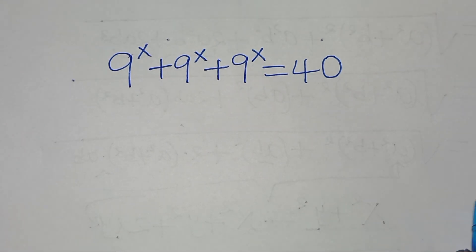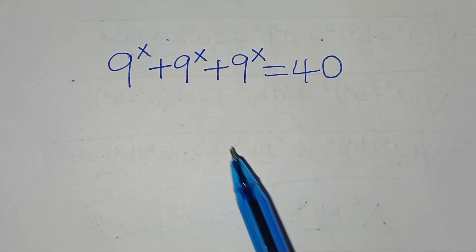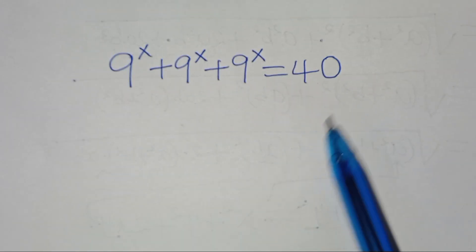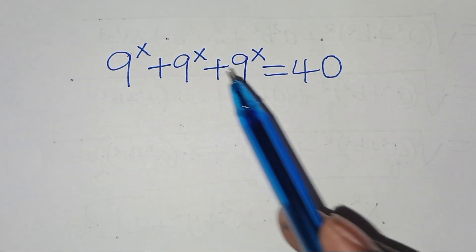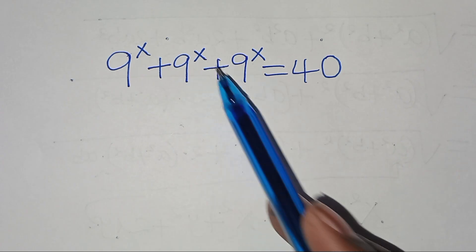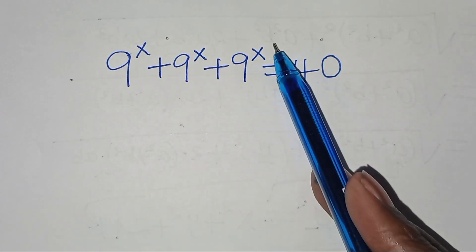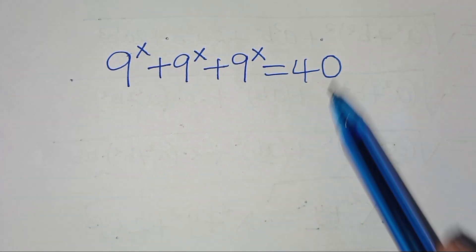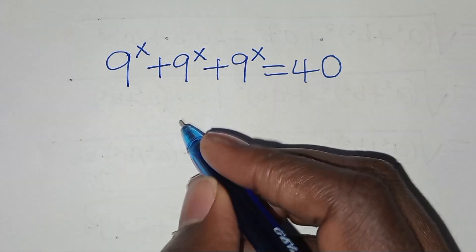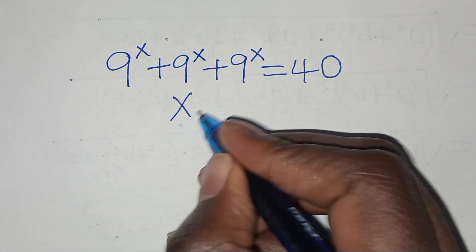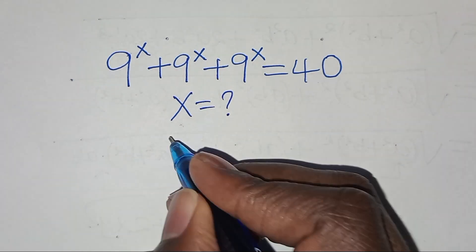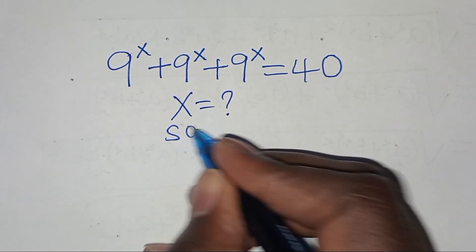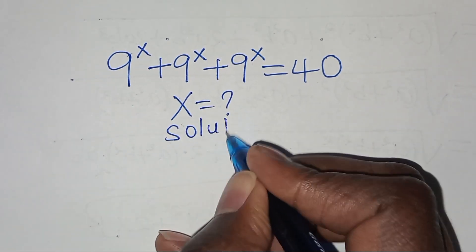Hello everyone, you are welcome to solve this nice exponential equation: 9 to the power x plus 9 to the power x plus 9 to the power x, this is equal to 40. What is the value of x?